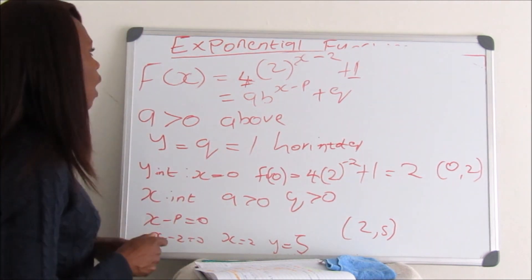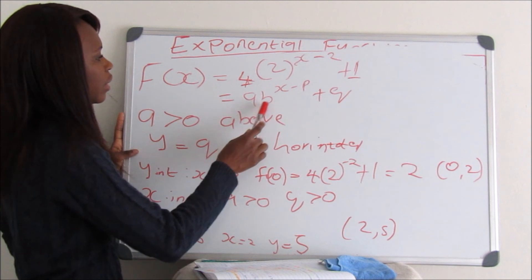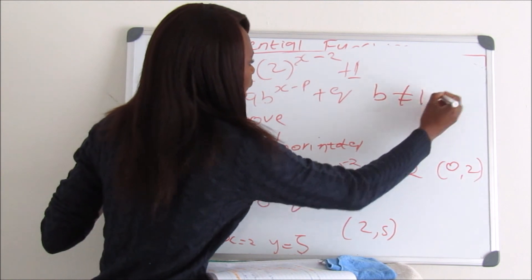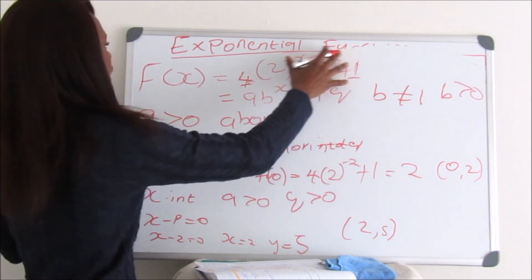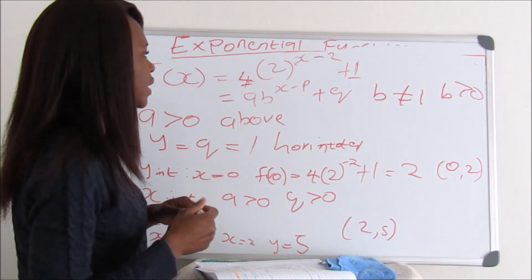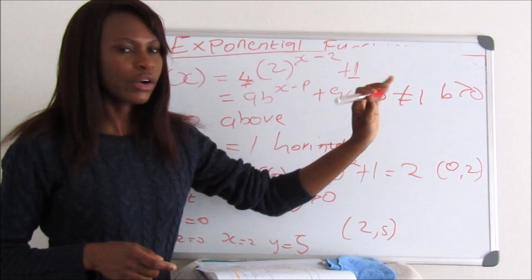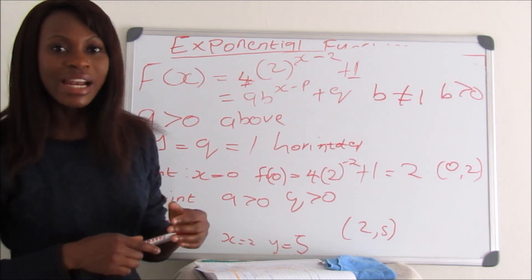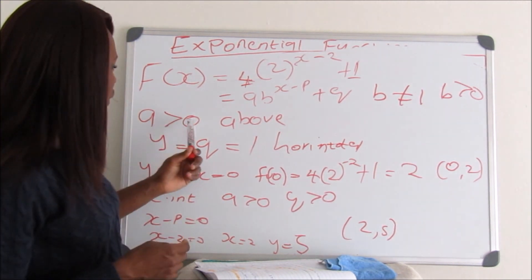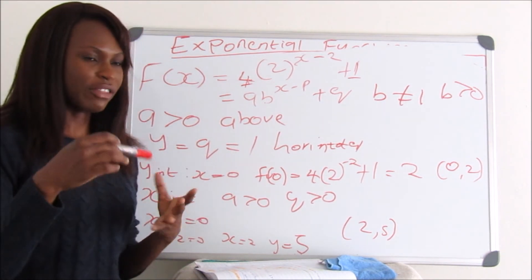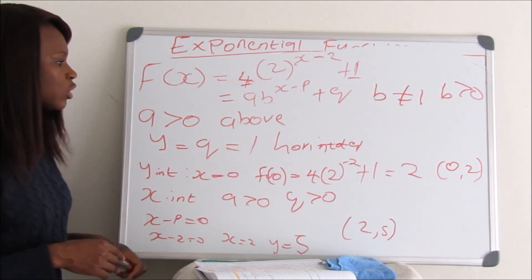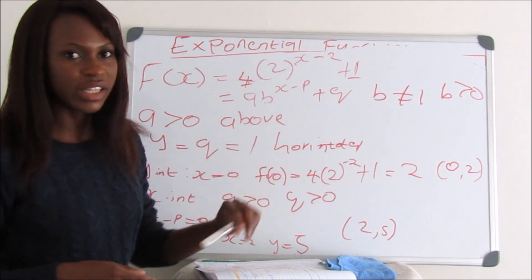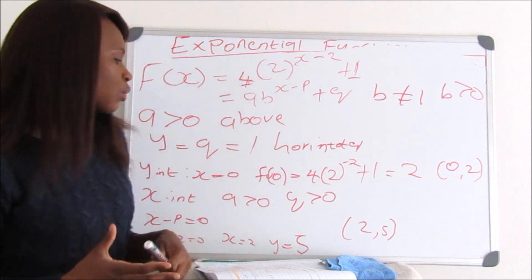Quick recap: the graph is in the standard form AB to the exponent of X minus P plus Q. B should never equal 1 and should always be greater than 0 — from our equation, B equals 2, which satisfies both conditions. A determines which side of the asymptote the graph lies on; since A is greater than 0, the graph lies above the asymptote. The horizontal asymptote is Y equals Q, which equals 1.